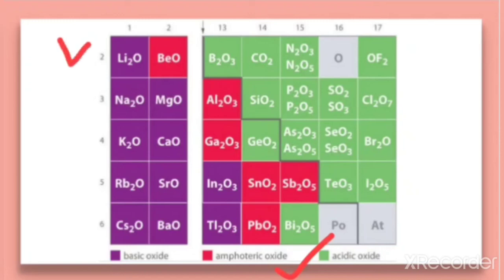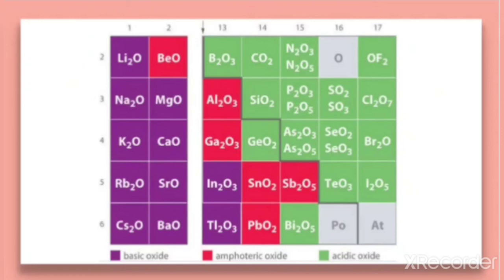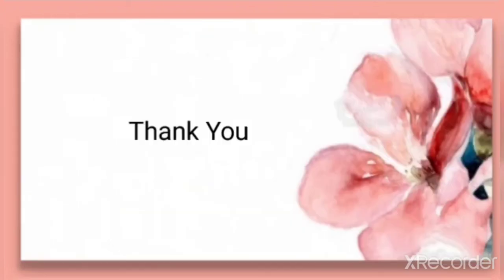To summarize: elements on the left form basic oxides, elements on the right form acidic oxides, and elements in between form amphoteric oxides. This concludes our discussion on chemical reactivity and periodic trends — covering atomic radius, ionization enthalpy, electron gain enthalpy, electronegativity, and valence. Have a nice day, students.